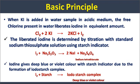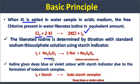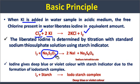When potassium iodide is added to the water sample in acidic medium, the free chlorine present in the water reacts with potassium iodide and liberates an equivalent amount of iodine. This liberated iodine is determined by titration with hypo solution — sodium thiosulfate. The amount of chlorine present is equivalent to the iodine liberated, which in turn consumes an equivalent amount of hypo solution. The starch indicator, an adsorption indicator, gives a deep blue or violet color with iodine.